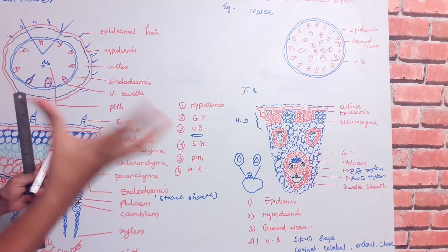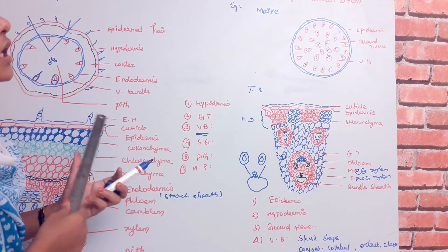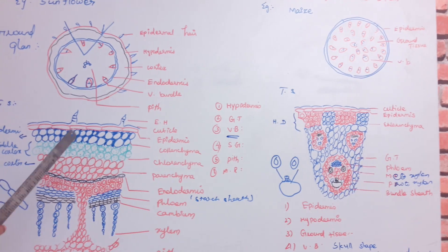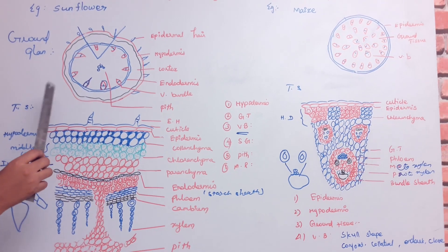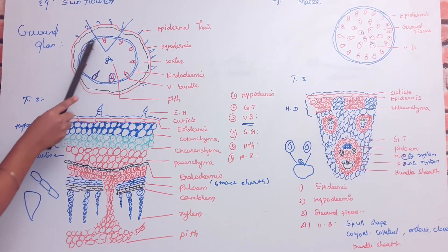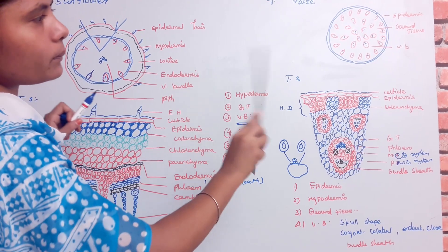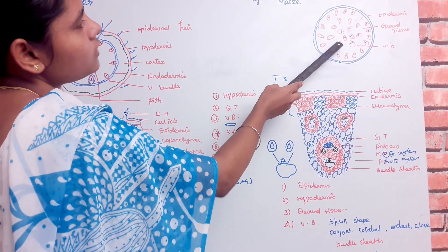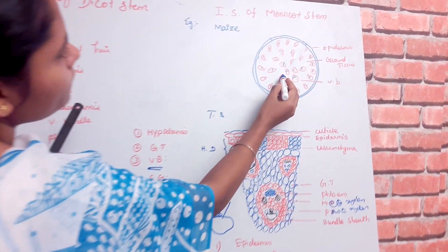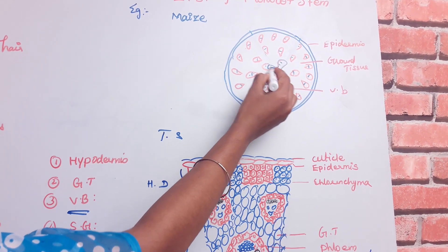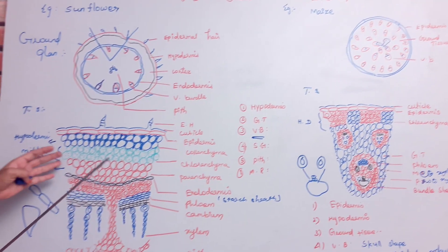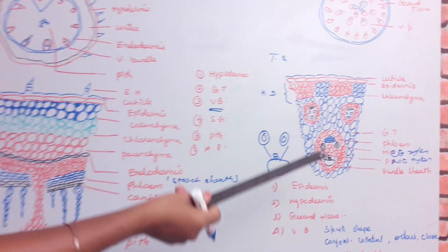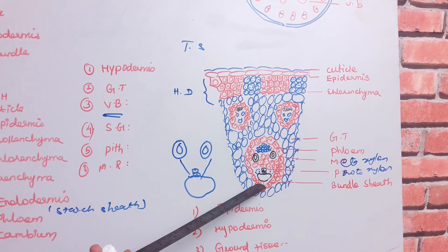The third difference is the arrangement of the vascular bundle. In the dicot stem, the vascular bundles are arranged in a ring pattern. In the monocot stem, the vascular bundles are scattered throughout the ground tissue. Also, in the monocot the vascular bundles vary in size — smaller at the periphery and bigger toward the center.